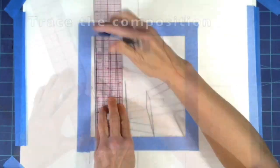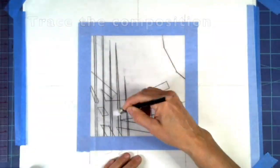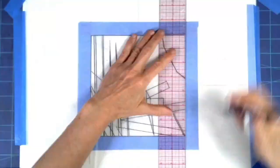I'm going to put tracing paper over that and trace the composition onto the tracing paper and the inner edges of the template.